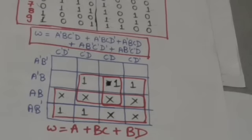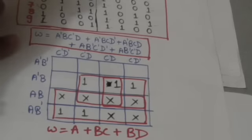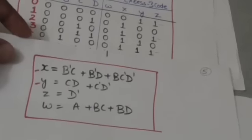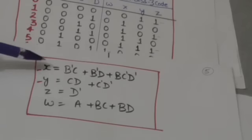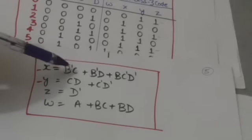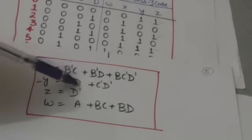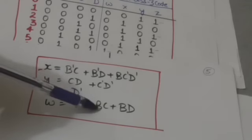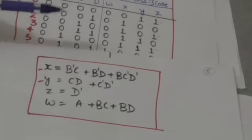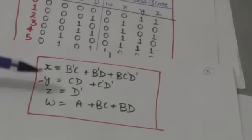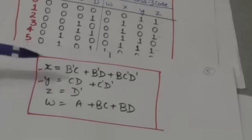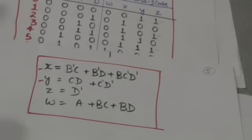Similarly, we can obtain simplified boolean functions for output variables X, Y, and Z. The results are: W = A + BC + BD; X = B'C + B'D + BC'D'; Y = CD + C'D'; Z = D'. These boolean functions for output variables W, X, Y, and Z describe the combinational circuit that is the BCD to Excess-3 code converter. Thank you very much.